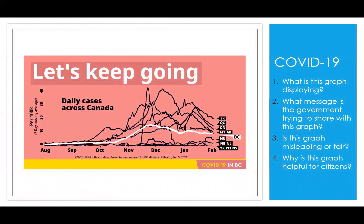Here's a familiar looking graph — very recent. This is from February 5th, 2021, about the COVID cases in BC, from the government of British Columbia. What is this graph displaying? These are the daily COVID cases across Canada from August until now, separated by all the different provinces. On the y-axis it says 'per 100k,' so per 100,000 people. In white is BC, highlighted with all the other provinces in black.